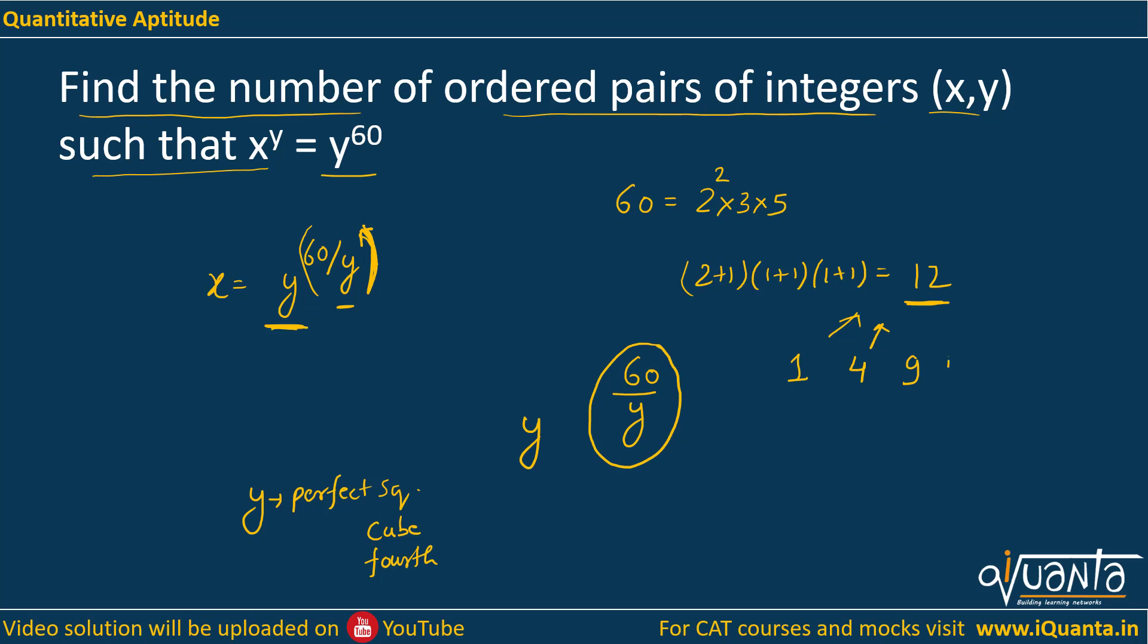Similarly if I talk about 16, I will be getting 16 to the power 60 by 16. So 16 to the power 60 by 16, this will give me 2 to the power 4 into 60 by 16. So y can be 16 as well. So we will add one more value to this 12.